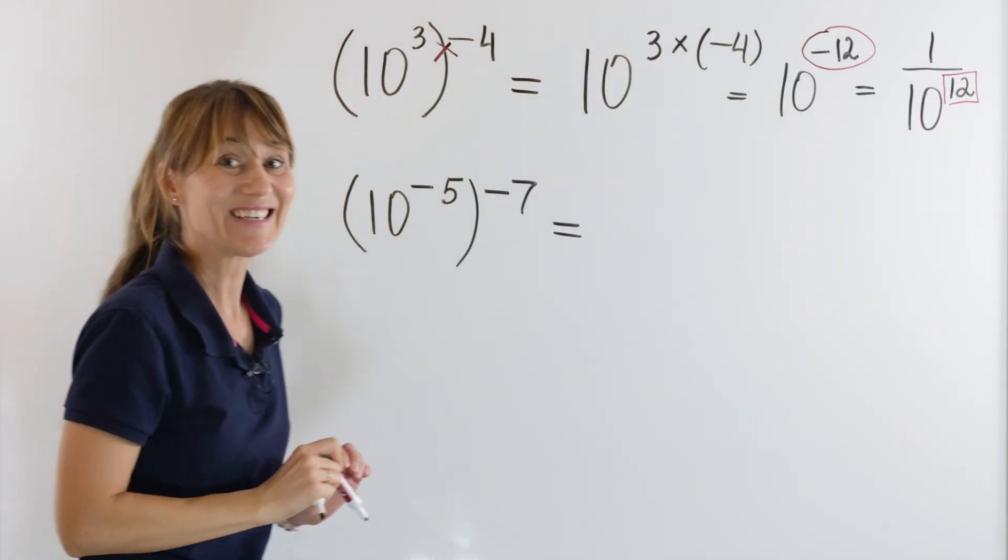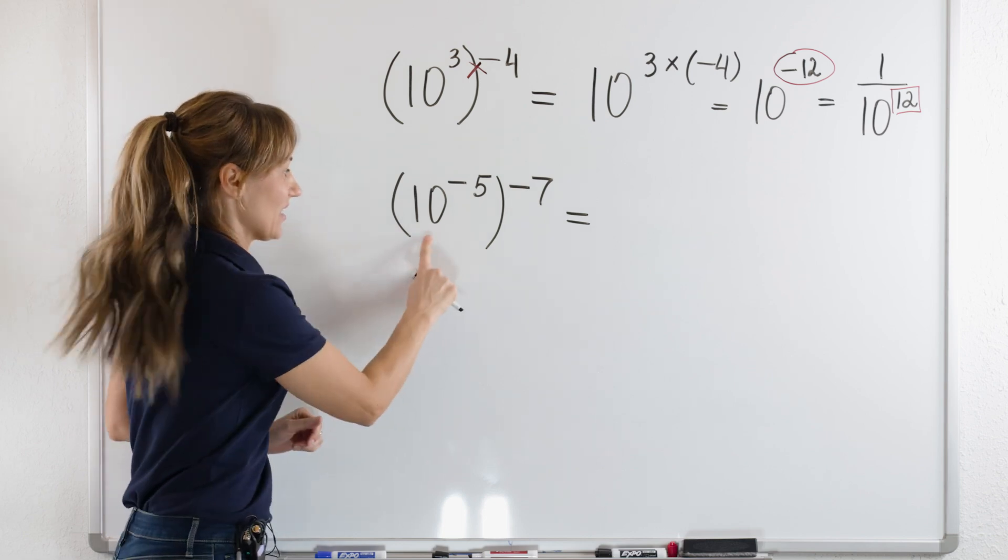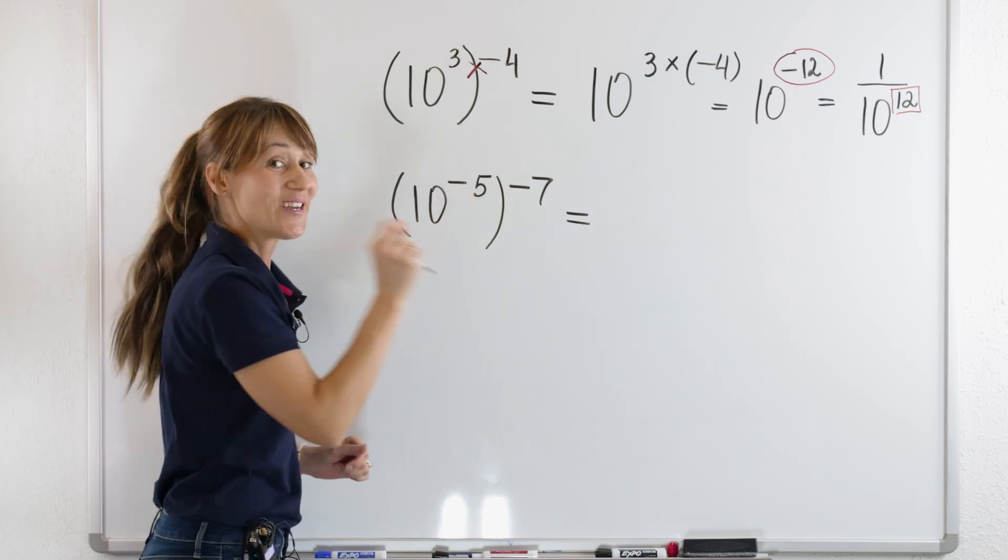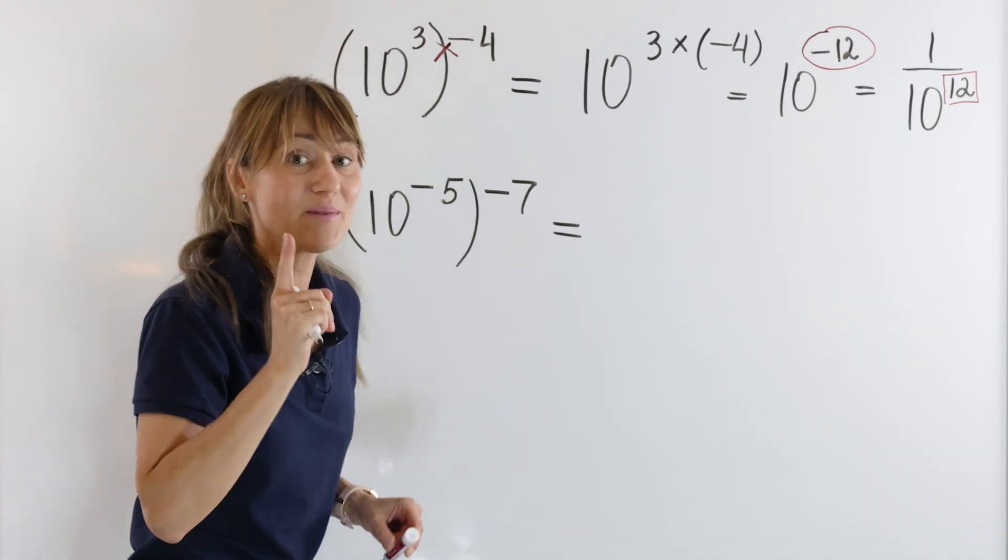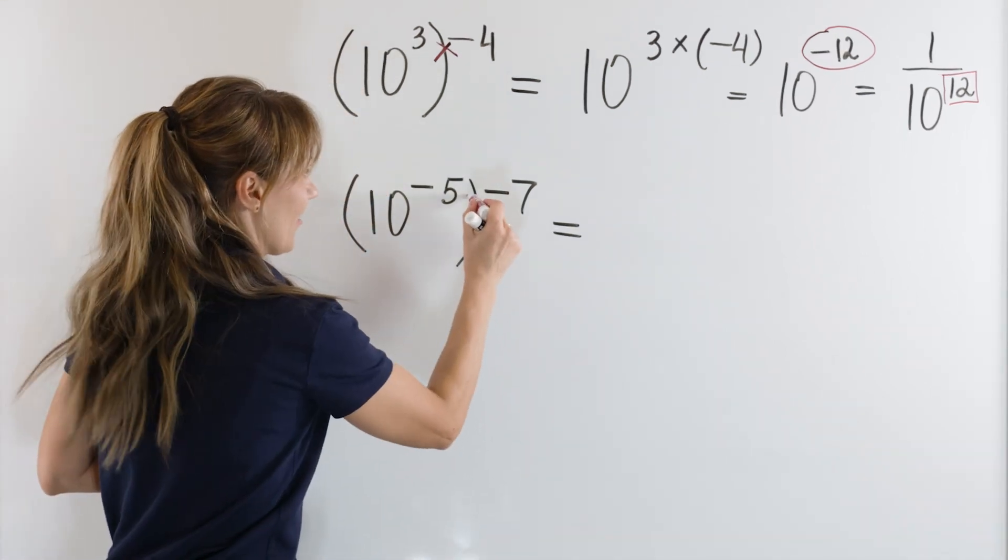Let's do another example. We are raising 10 to the power of negative 5 to another power, negative 7. What do we do? We multiply the exponents right here.